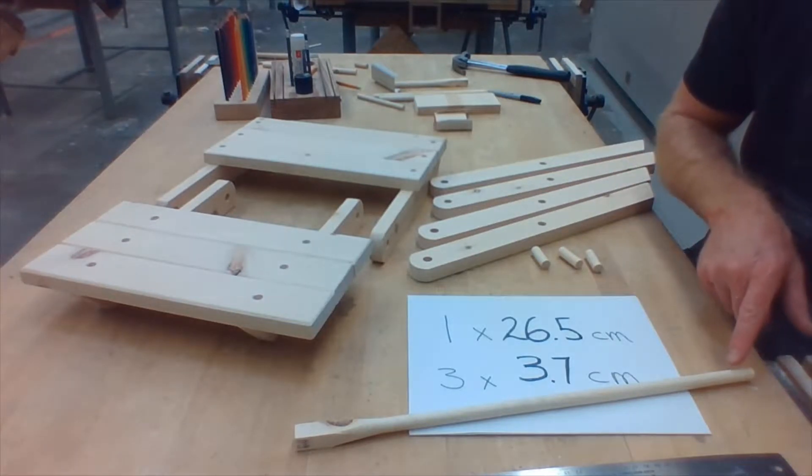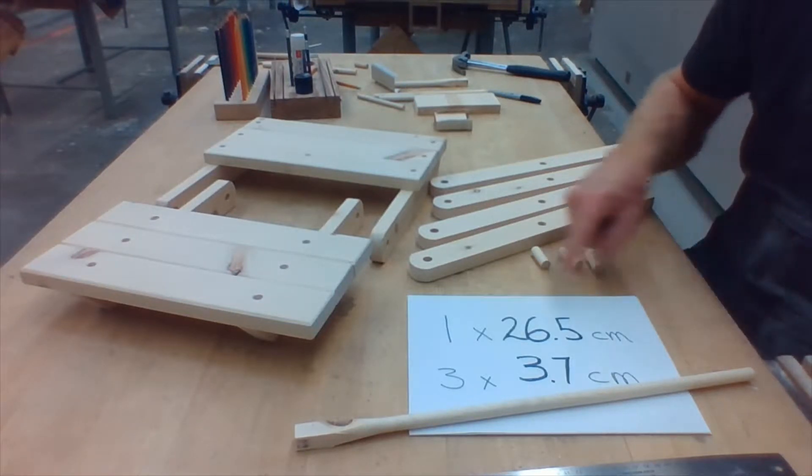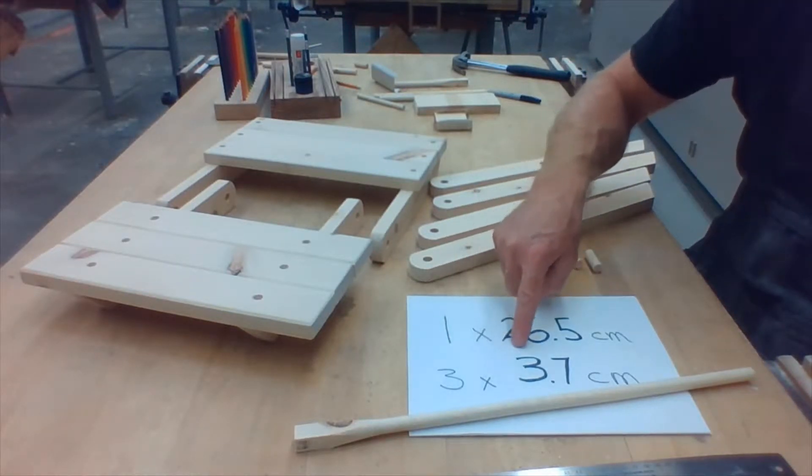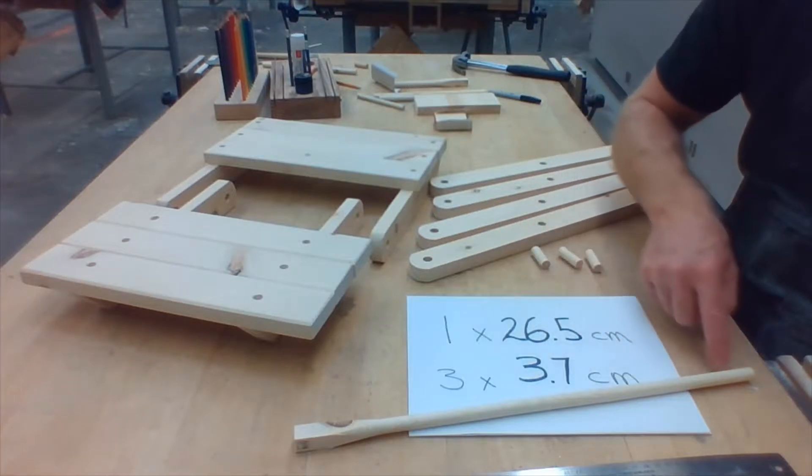You will need to get your dowel and cut it so that you have one piece that's 26.5 centimeters long and three pieces that are 3.7 centimeters long.